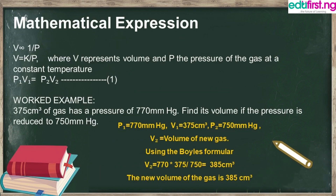For the mathematical expression of Boyle's Law: the volume of a given mass of gas is inversely proportional to pressure, so V is proportional to 1/P. Using the constant of variation, V = k/P, where V represents volume and P the pressure of the gas at constant temperature. We can relate this to the formula P₁V₁ = P₂V₂.